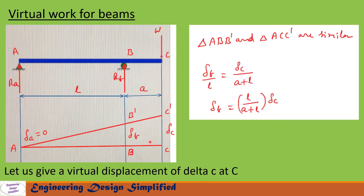To find reaction at B, let us give a virtual displacement of delta C at C. The beam will assume the position A, B prime, and C prime. We have two triangles: A-B-B prime and A-C-C prime. The displacement at C is delta C, the displacement at B is delta B, and delta A equals zero. From these two similar triangles we can write: delta B divided by L equals delta C divided by (A plus L).